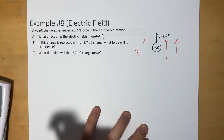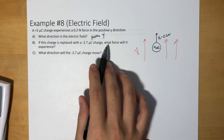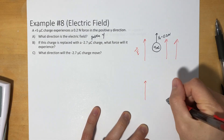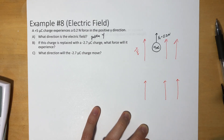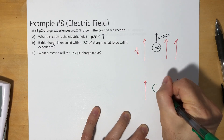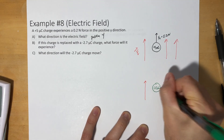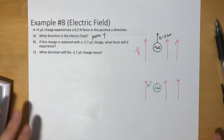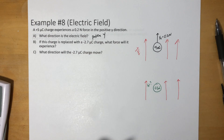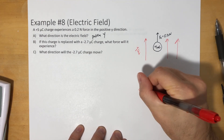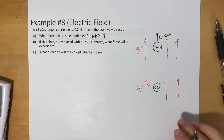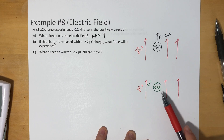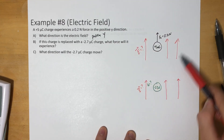Now, if the charge is replaced with a negative 2.7 microcoulomb charge, what force will it experience? We have the same electric field, but we're replacing the charge with a negative 2.7 microcoulomb charge, and we want to know the force it experiences. To solve this, we first need to figure out how strong the electric field is. On one side we have two pieces of information, and on the other only one, so we'll use the first part to find the electric field.